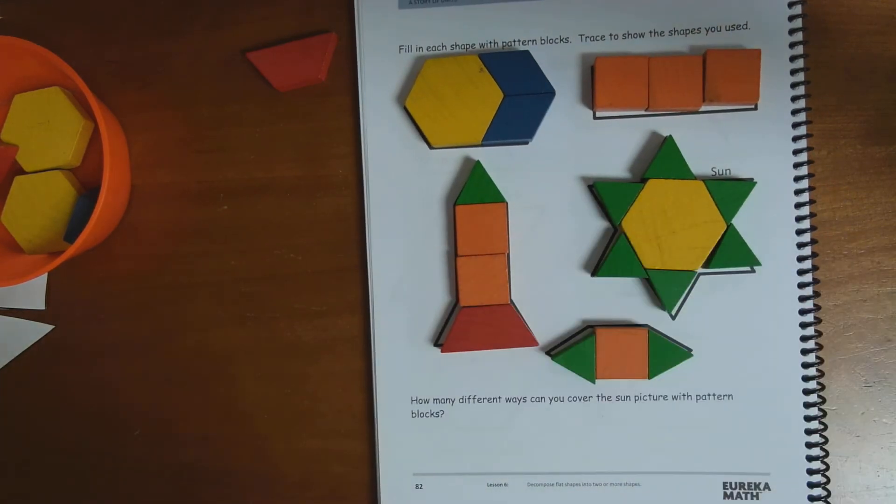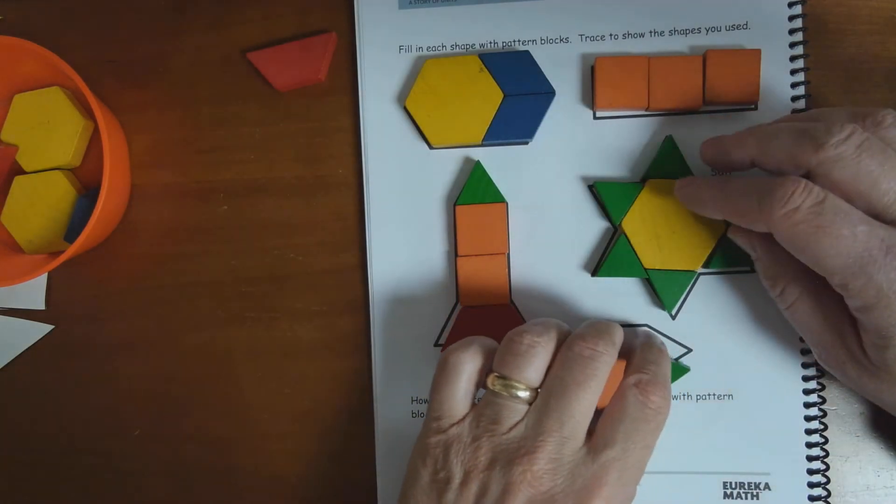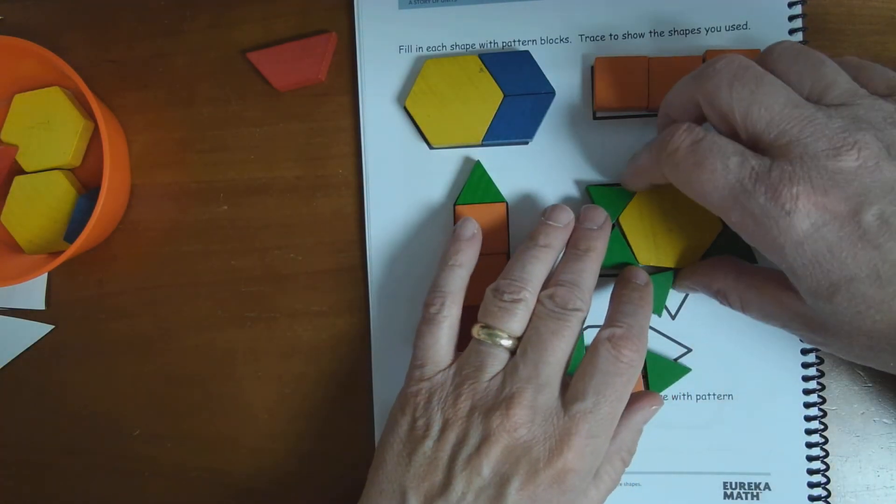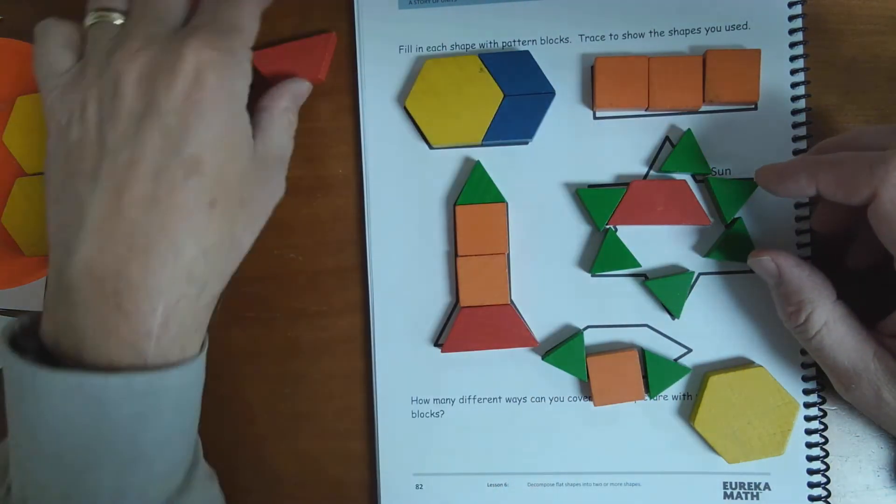You could pause this paper and kind of copy with your lines. Maybe even color in the shapes that we used. All right. Now this says how many different ways can you cover the sun picture. Well, if I took the yellow one out, I could put two red ones in.